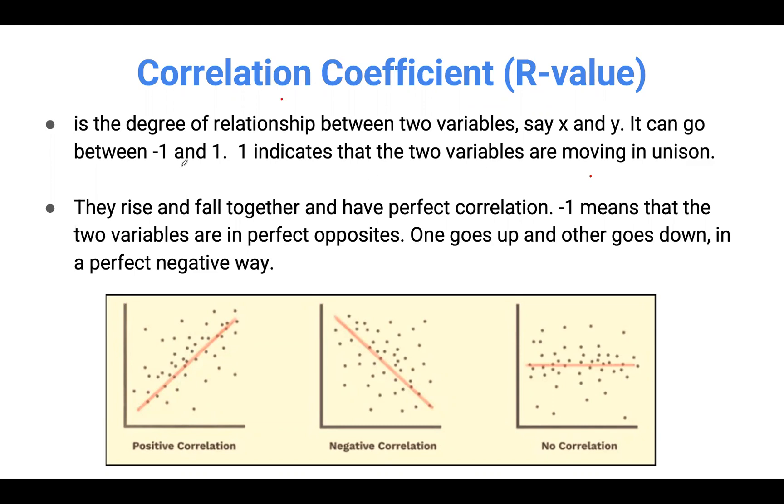Correlation coefficient is the degree of relationship between two variables, say X and Y. It can range between minus one to one, with one indicating that the two variables are moving in unison.